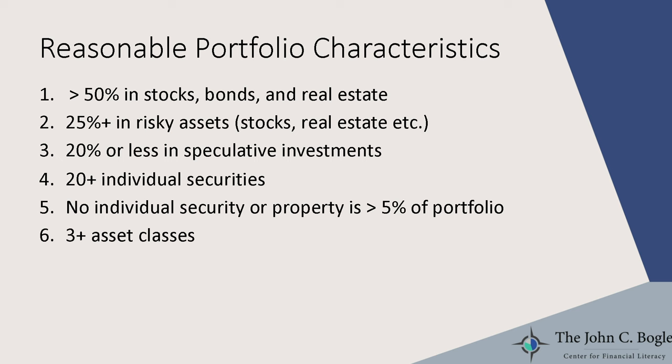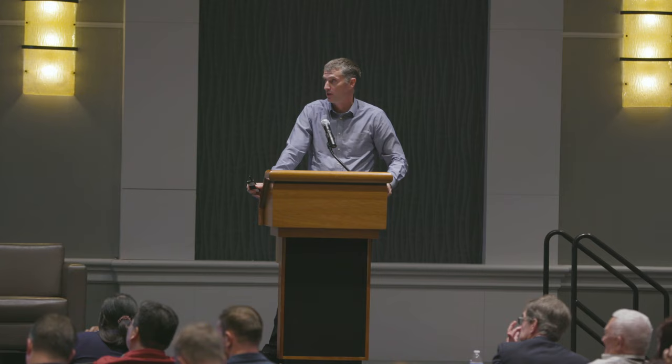To recap: reasonable portfolio characteristics — at least 50 percent in stocks, bonds, and real estate instead of weird stuff; at least 25 percent in risky assets; 20 percent or less in speculative investments; 20-plus individual securities; no individual security or property more than 5 percent of the portfolio; at least three asset classes. What matters: funded adequately, a reasonable portfolio, and sticking with it. Stay the course. Thank you for your attention.